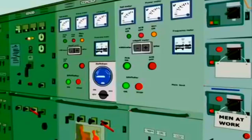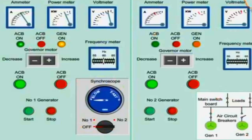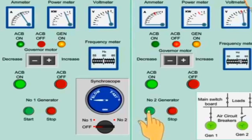The control panel of a generator is located in the main switchboard. Assume that number one generator is running on load. Number two generator needs to be started and synchronized with generator one. Start the number two generator and check the voltage.